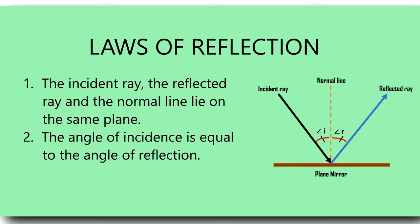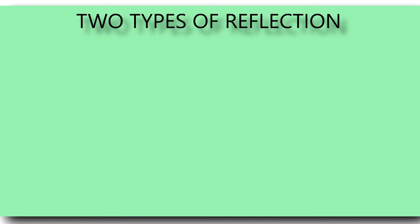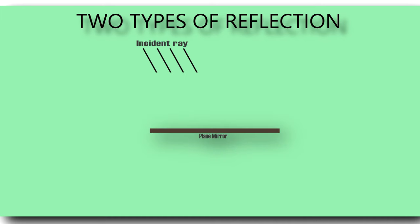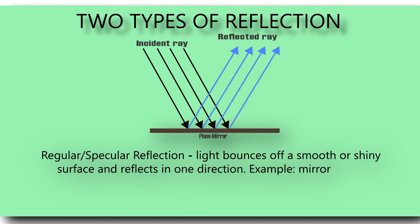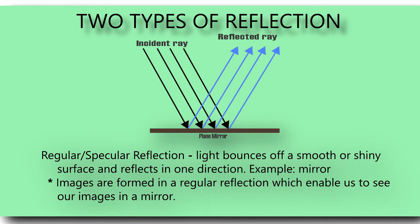We have two types of reflection of light. The first is when light strikes a smooth surface like a mirror — we call this regular reflection or specular reflection. In a regular reflection, light bounces off a smooth surface and reflects in one direction. Images are formed in a regular reflection, and that is why we are able to see ourselves in a mirror.